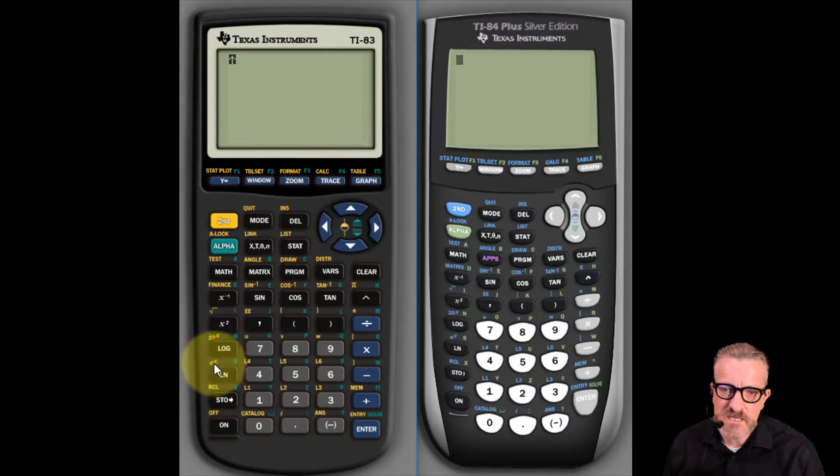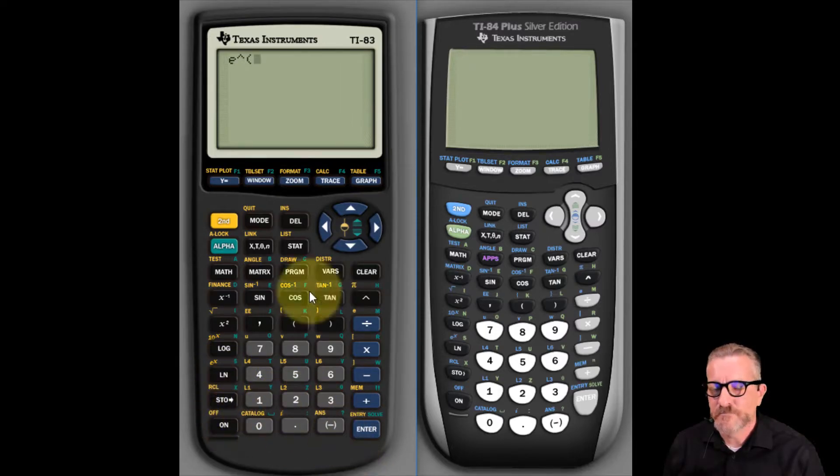You'll see the little e with x, and so this will give us our constant value that we're looking for. So we're gonna hit enter on the L-N and what this does is it gives us the carrot. So the carrot's usually used when you want to have an exponent.